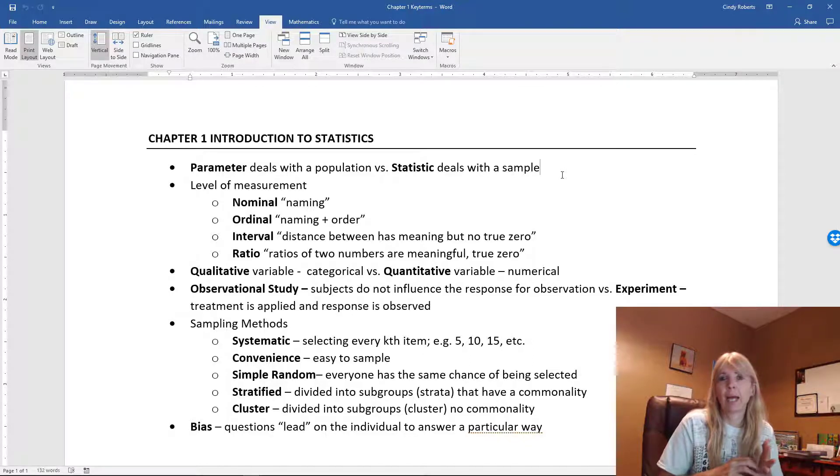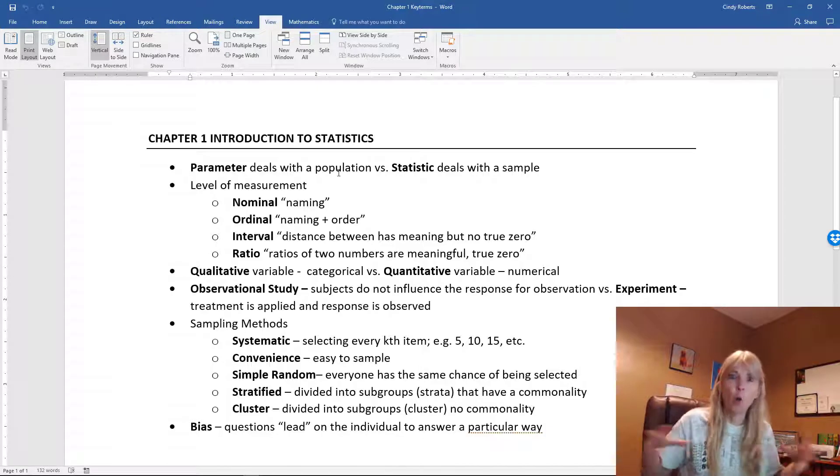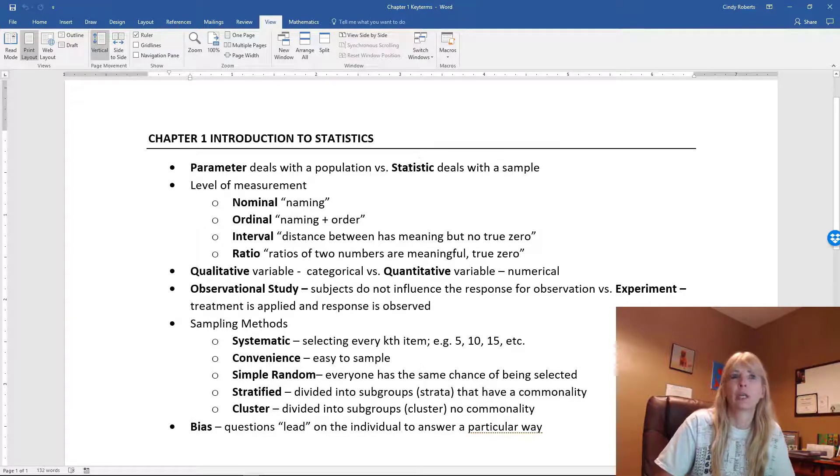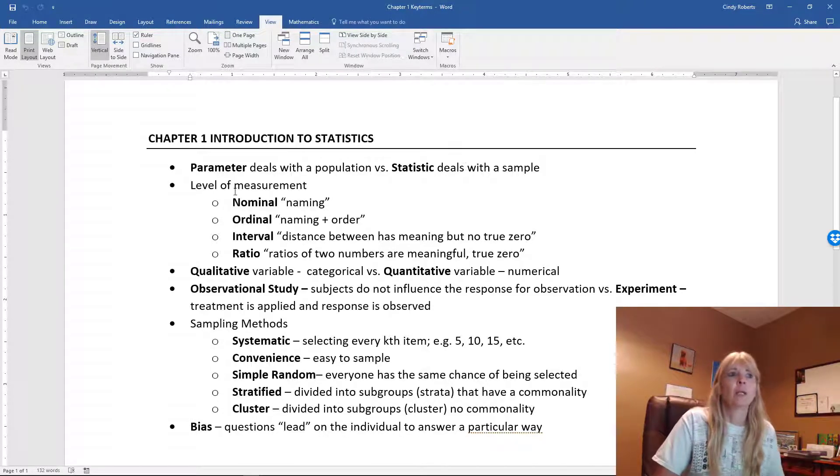So when I ask you what's a population parameter, like the population mean or the population standard deviation, the population is the whole, the people you're interested in. And we know we can't get everybody, so we typically go out and get a sample, which then would be our sample statistic, like a sample mean.